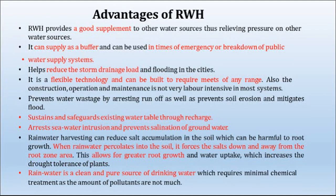This allows for greater root growth and water uptake, which increases drought tolerance of the plant and thereby you can have a good yield in your farm. Rainwater is a clean and pure source of drinking water which requires minimal chemical treatment as the amount of pollutants is not much. Since it is not contaminated by pollution sources, you can use the rainwater directly for drinking purposes with minimal treatment.